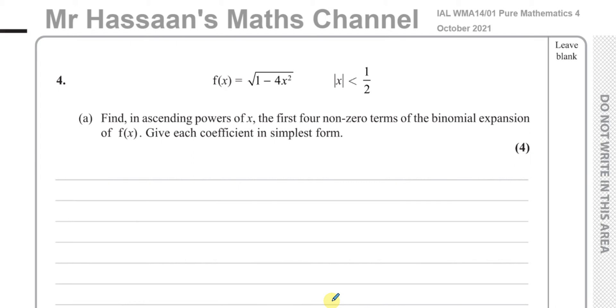Welcome back, this is Mr. Hassan's Maths Channel, and I'm now answering question number four from the October 2021 Pure Mathematics P4 International A-Level Edexcel exam. This question is about binomial expansion, and they told us that f(x) is the square root of 1 minus 4x squared, and the modulus of x must be less than a half. Find in ascending powers of x the first four non-zero terms of the binomial expansion of f(x), giving each coefficient in its simplest form.